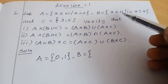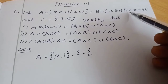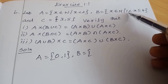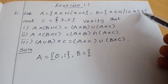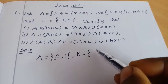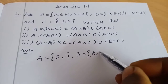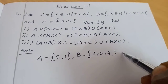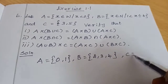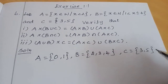For B, X belongs to natural numbers with the condition 1 less than X less than or equal to 4. So the elements of B are {2, 3, 4}. C is already given in roster form, so C = {3, 5}.